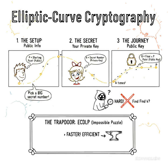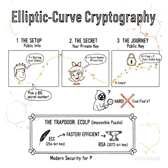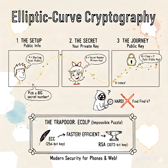A hacker who knows P and Q cannot efficiently figure out the secret multiplier K. It's like finding the exact number of steps taken across a massive, randomized path. Because the ECDLP is so mathematically difficult, ECC achieves the same security as RSA with drastically shorter keys. For example, a 256-bit ECC key equals a 3072-bit RSA key.